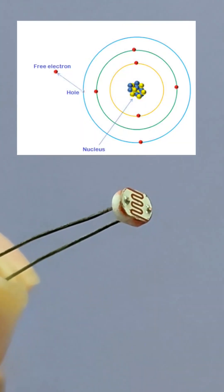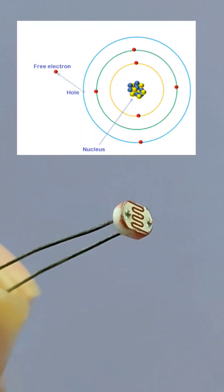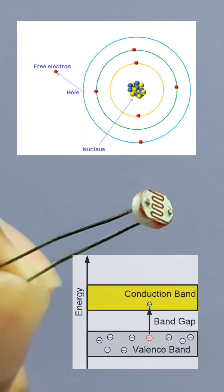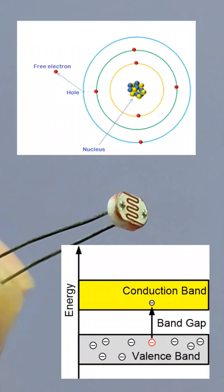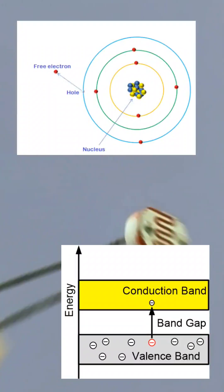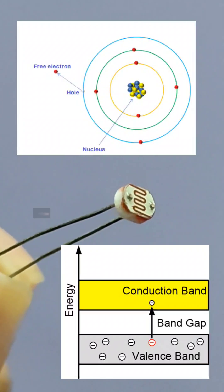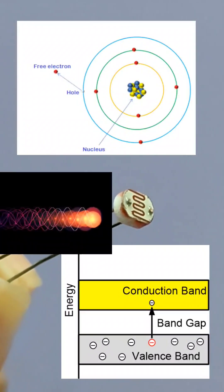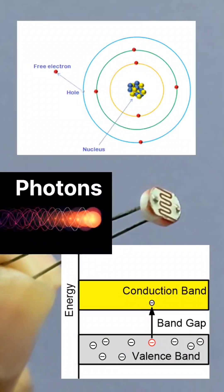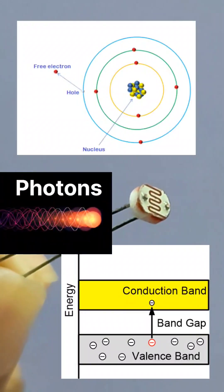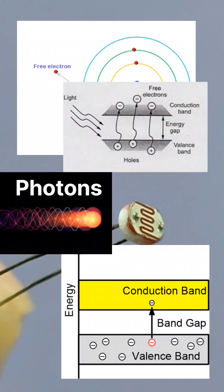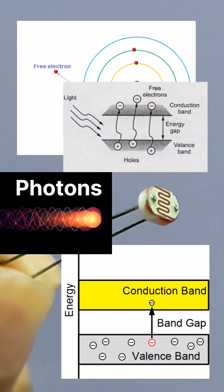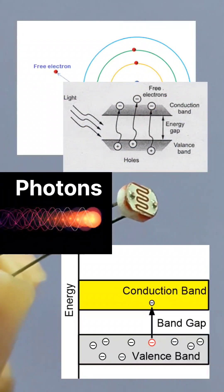We can see the electron in a low-energy state called the valence band, and there is also another band called the conductive band. When light appears, it is made of small energy packages called photons. When photons touch the semiconductor, the low-energy state electron jumps into the conductive band and reduces the resistance.